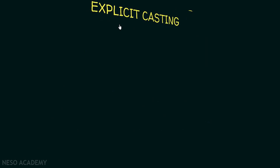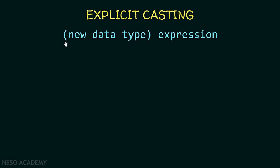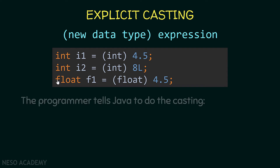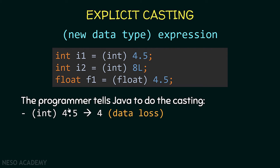The programmer must tell Java to convert these values using explicit casting. The syntax is: open parentheses, put the new data type inside, then the expression to convert. For example, casting 4.5 to an integer — Java will convert 4.5 to 4, losing 0.5. This data loss is exactly why implicit casting cannot happen here. After the cast, 4 is an integer and can be stored in the integer variable without problems.